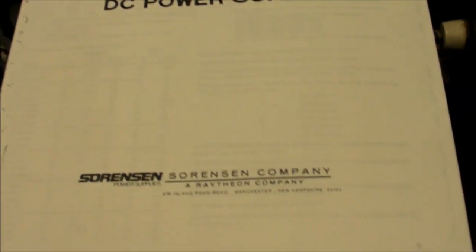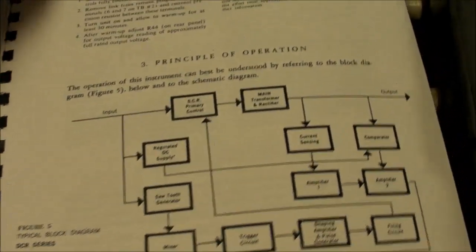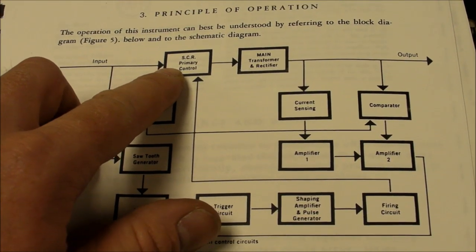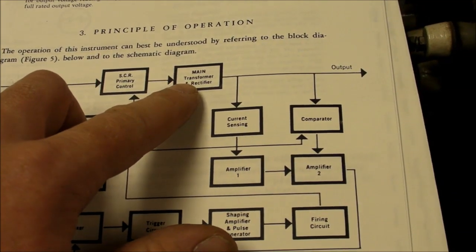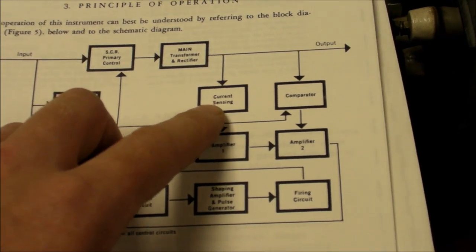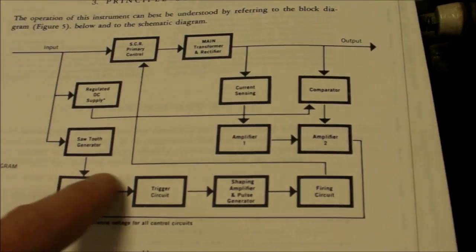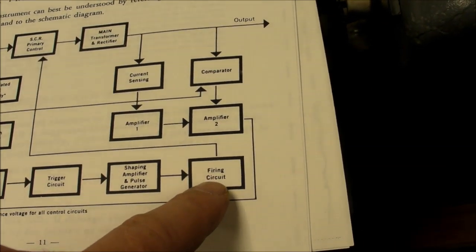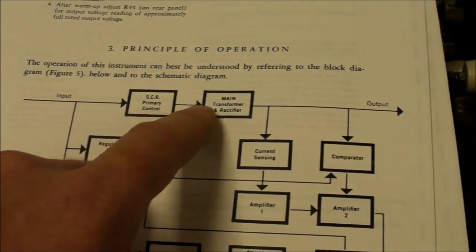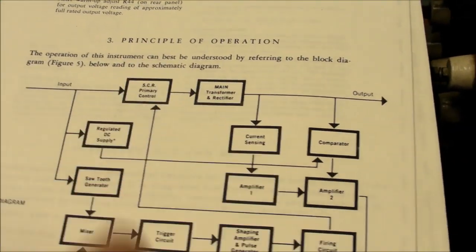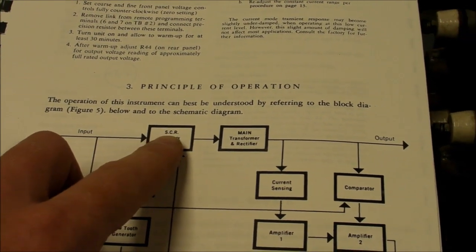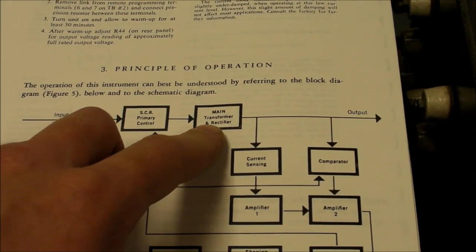And, well, I do have a copy of the manual right here. And it looks like I was right. Here's the input. Goes to SCR primary control, and then to the main transformer and rectifier. Then there's current sensing through that current shunt resistor, and then some amplifiers and a whole bunch of other stuff, ultimately ending at firing circuit. And then that goes back up to SCR control. So that's how it's able to maintain certain voltages and currents on the output, simply by controlling how much of the line voltage actually makes it into the main transformer.